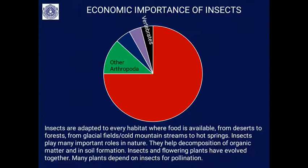The majority of plants need insect help for pollination. In this pie chart, the abundance of insects is shown in terms of number and number of species — they form the majority, 75 to 80 percent, while other arthropods contribute about 13 percent. Vertebrates account for just about 5 percent, invertebrates about 6 percent, and mammals even less — this shows the enormous importance of insects on this planet.